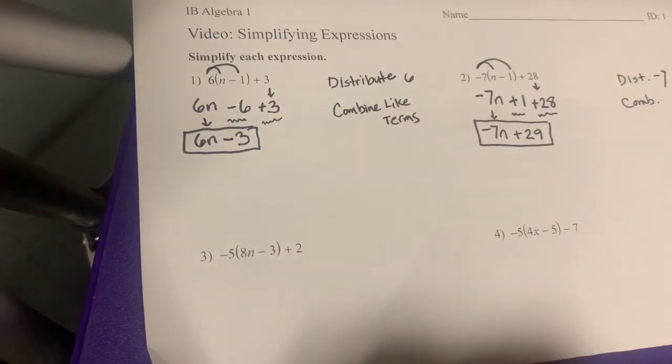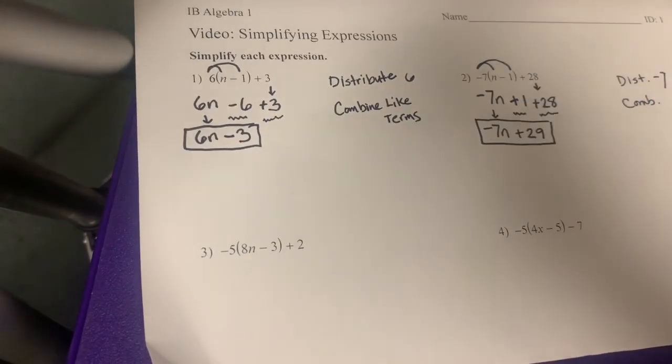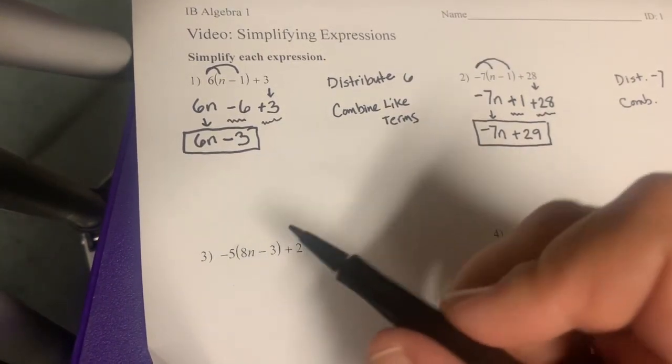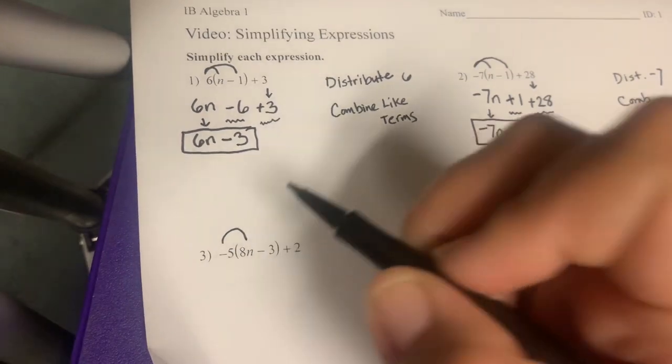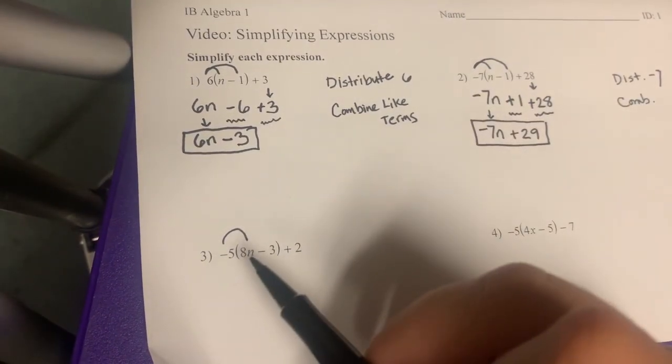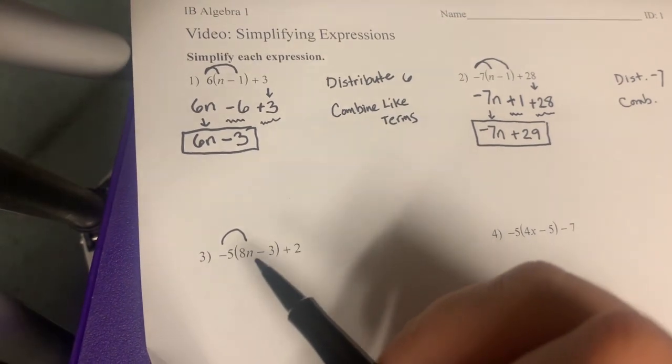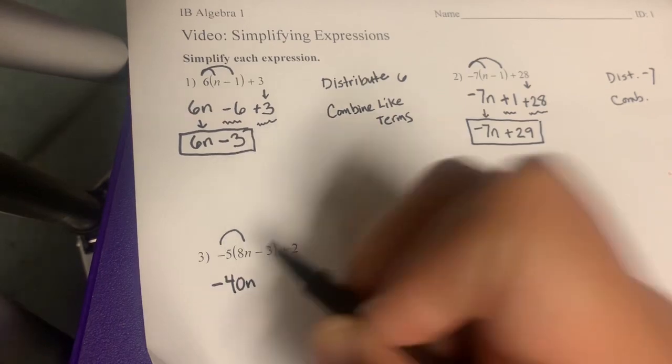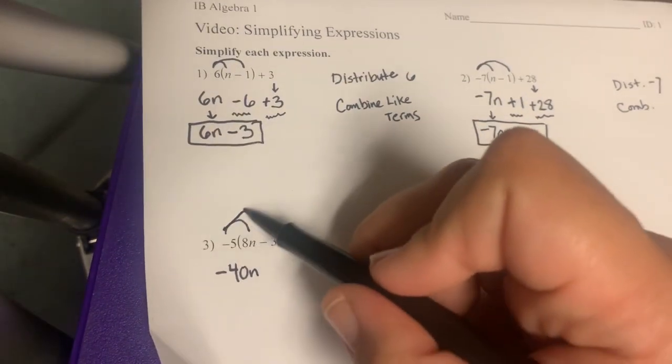All right, moving on to number three. In number three, we're going to distribute the negative 5 through the parentheses, but this time we have another number in the parentheses. So when I go to distribute negative 5, I'm going to have to do negative 5 times 8n. Negative 5 times 8 is negative 40, so it's going to be negative 40n. And I'm going to do negative 5...